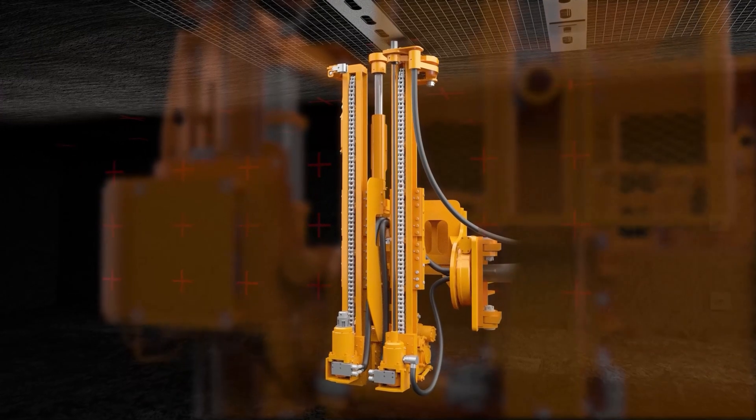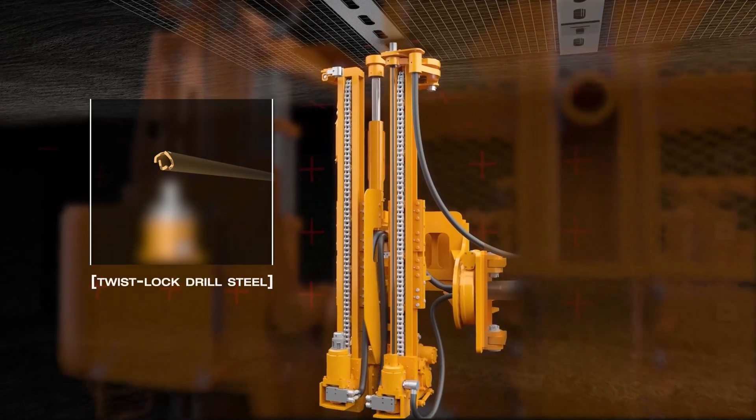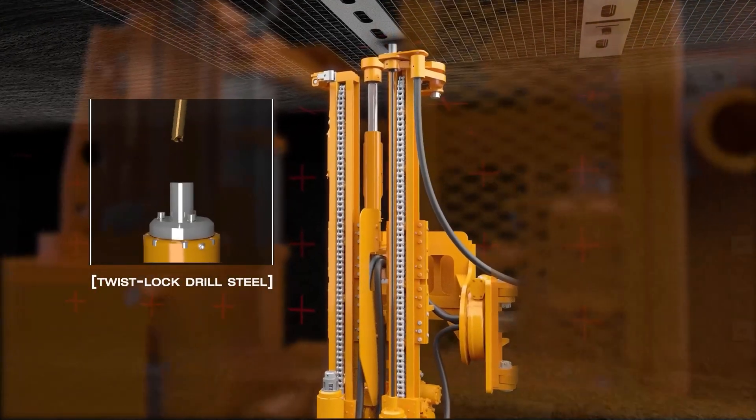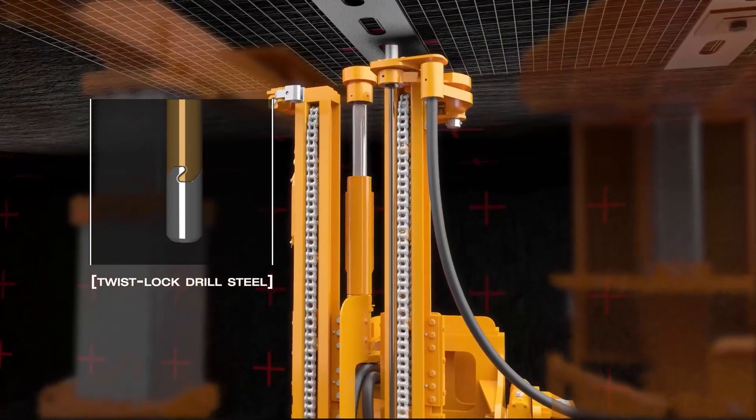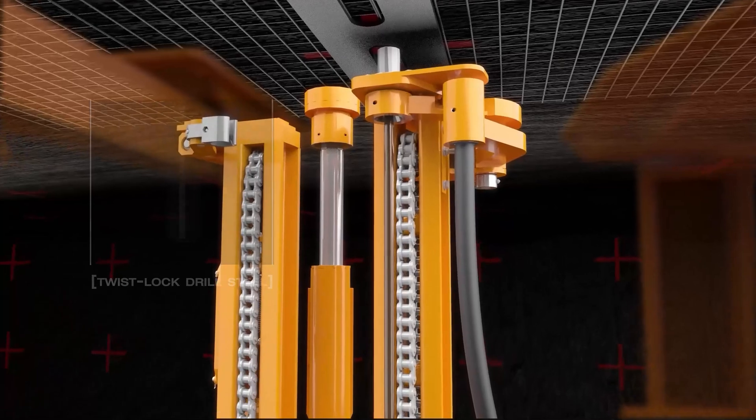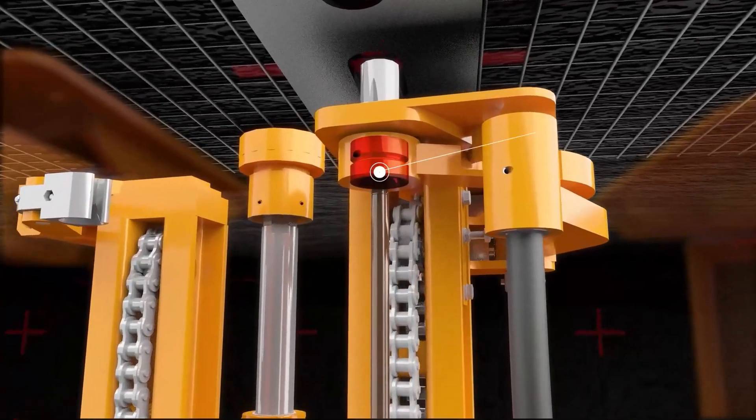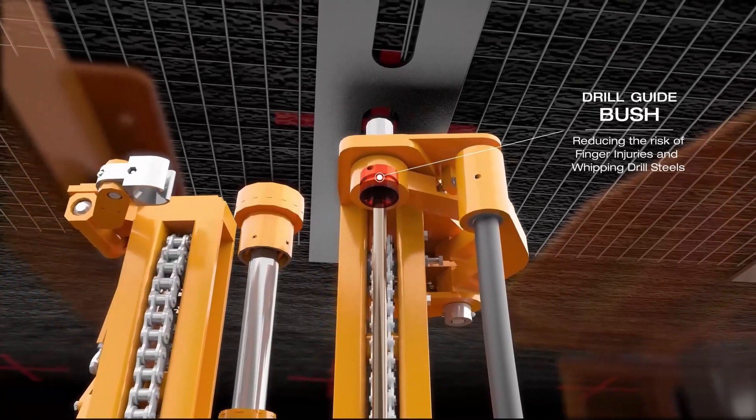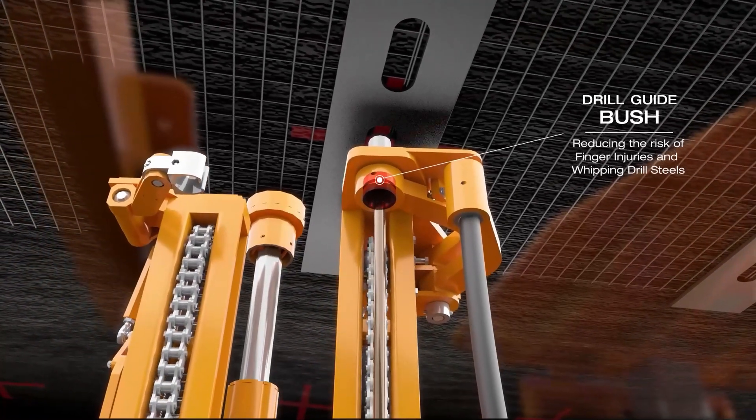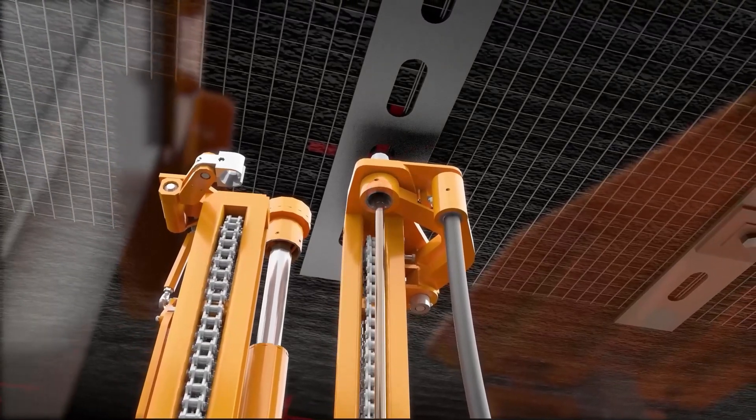A dedicated drill mast makes it possible to use a fixed-in-position twist-lock drill steel, which prevents the drill steel from staying behind in the roof or rib when retracting the drill head. The mast is also fitted with a drill guide bush at the top. There is no need for a hydraulic drill guide, reducing the risk of finger injuries and whipping drill steels.